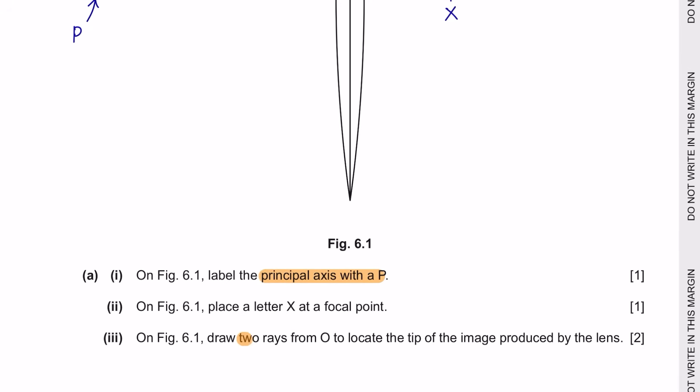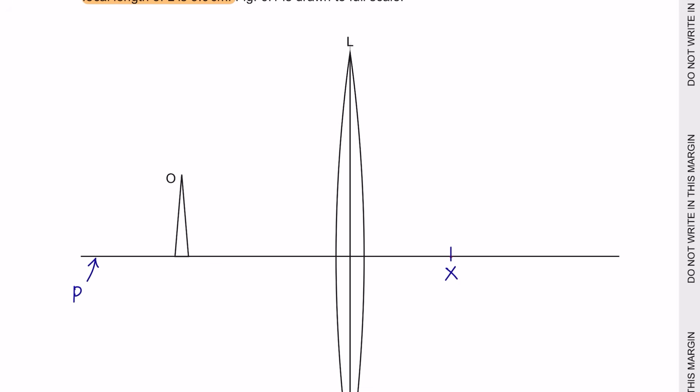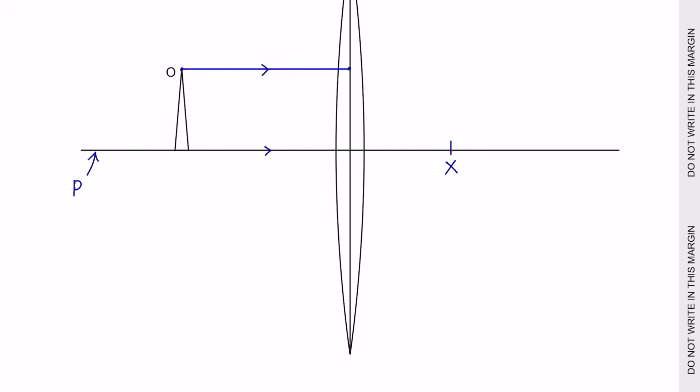And lastly, draw two rays from O to locate the tip of the image produced by the lens. To draw the image, we first must draw a parallel line with the principal axis from the tip of the object to the center of the lens. And from there, which is the center of the lens, you have to draw a straight line that passes through the focal point. And the third line, we're going to start from the tip of the object going through the center of the lens until it intersects the second line. And in this case, it intersects over here. So this is the position where the image would fall.